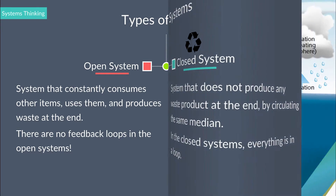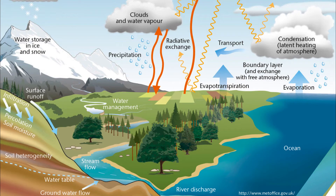Think about the water cycle in our world. The sun heats and evaporates the water on the oceans and the seas, and then creates water vapor. The resulting water vapor rises in air, which condenses into rain and goes back to the earth's surface.